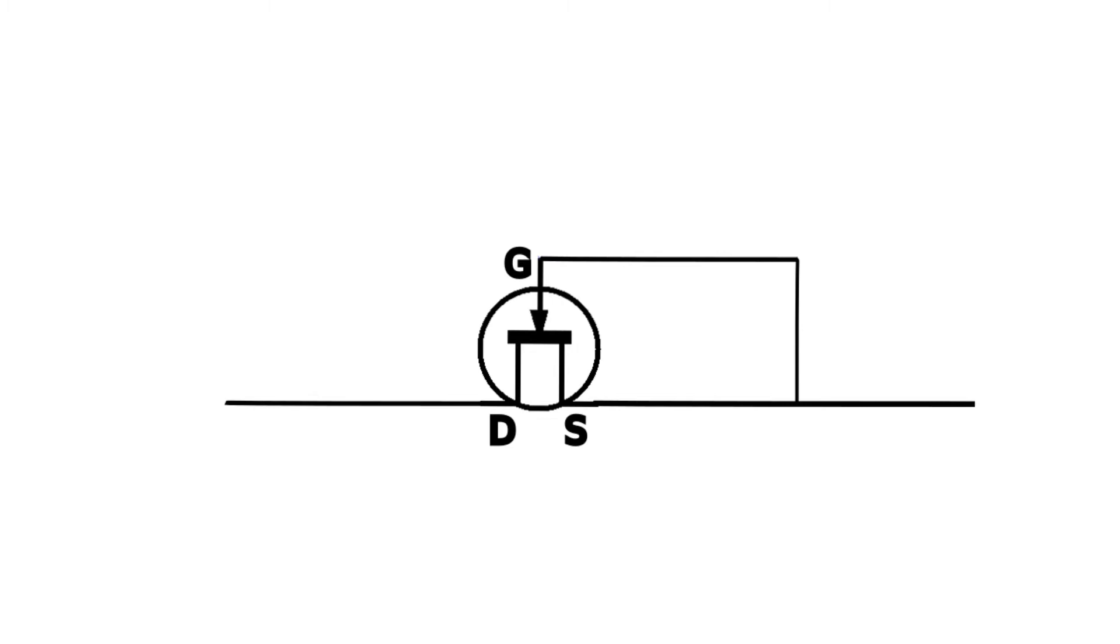Basically, if we connect a source and gate together, when the voltage between drain and source goes below a certain value, the JFET enters in its saturation zone.